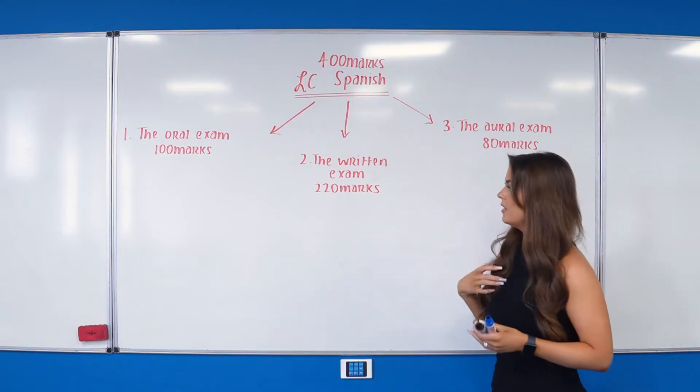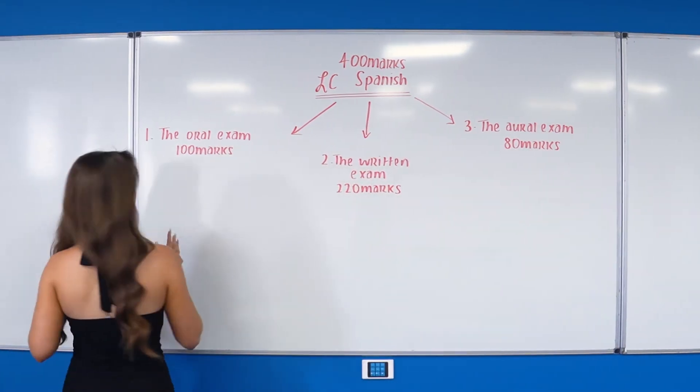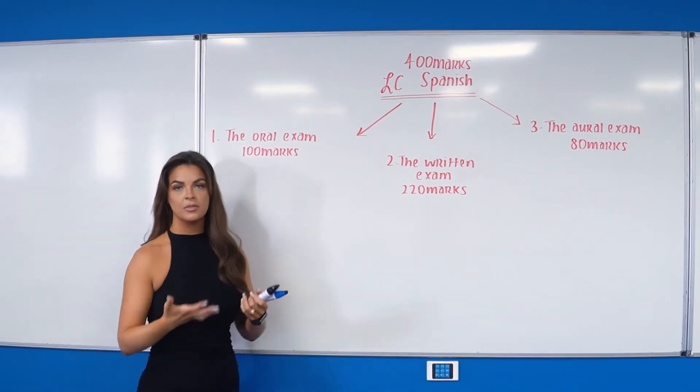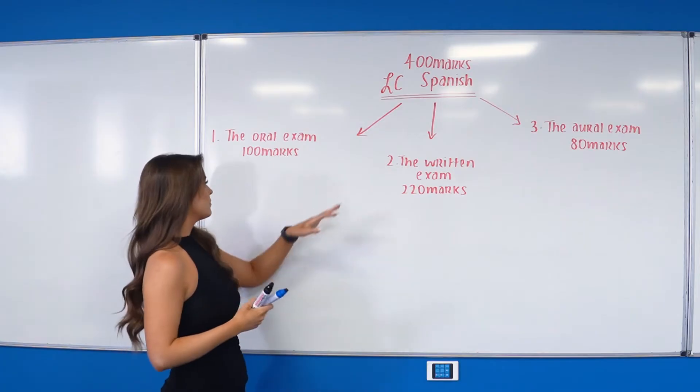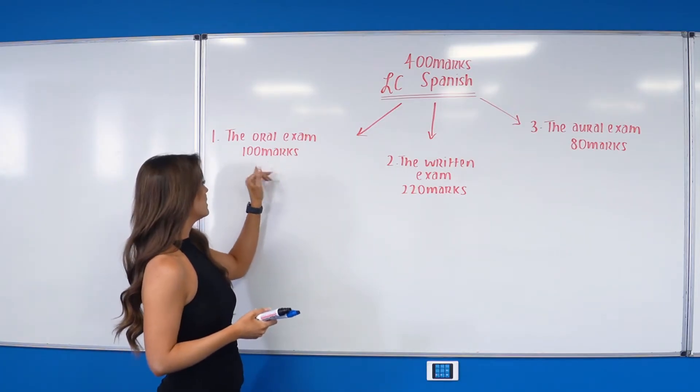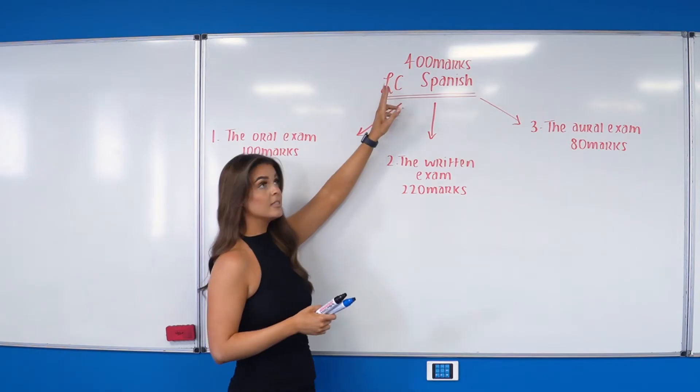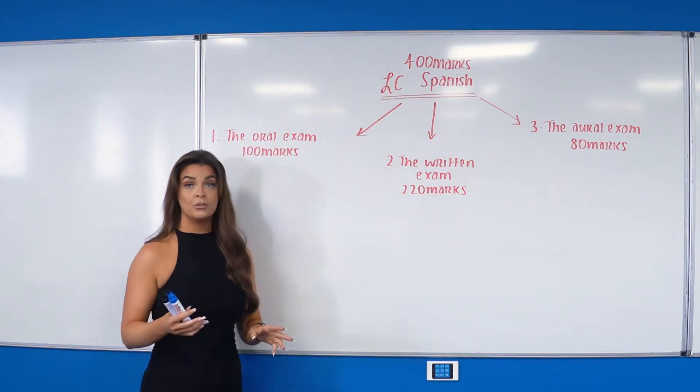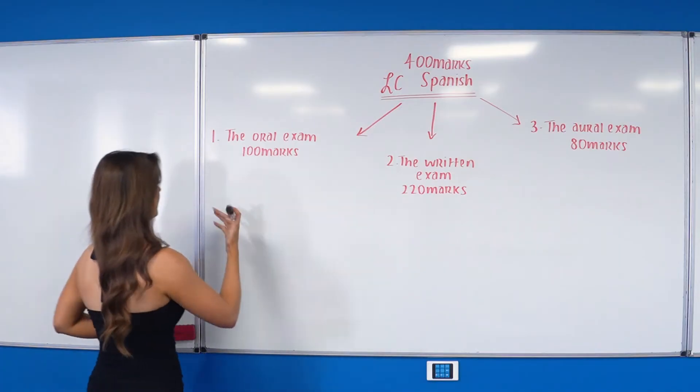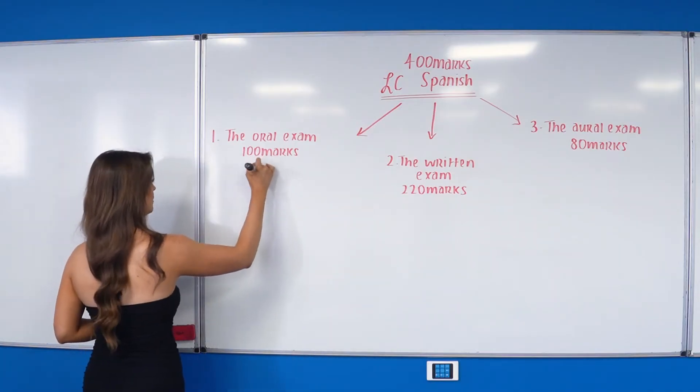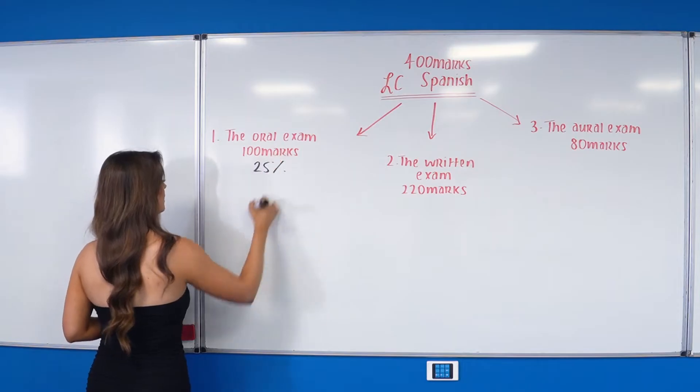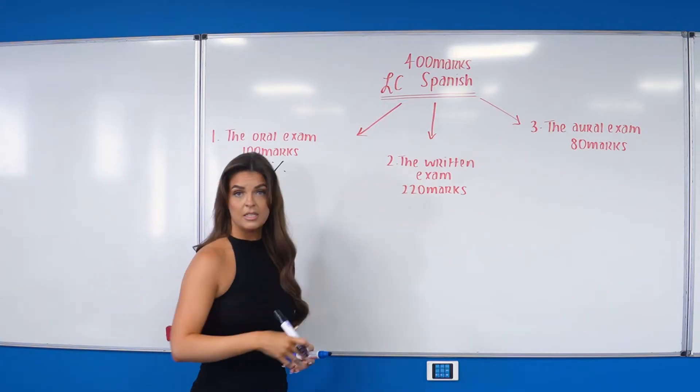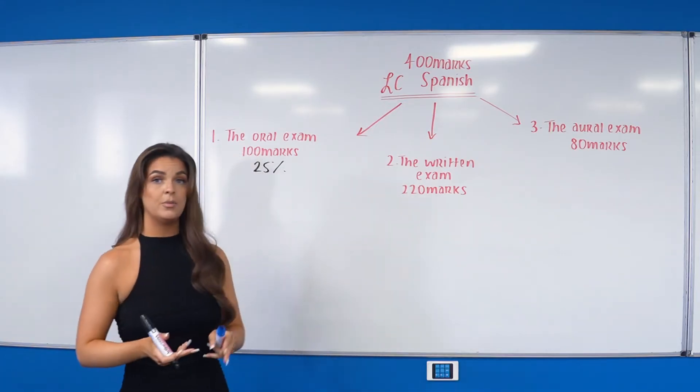Okay, so let's have a look at our first thing that's going to get us any marks for our Leaving Cert Spanish exam, which is the oral exam. So our oral exam is worth 100 marks. We have a look at the top of the board and we can see that the Leaving Cert Spanish exam as a total is worth 400 marks, so that would mean that our oral exam at higher level is going to be worth 25%, which is lovely because that means we have 25% in our back pocket as of Easter.